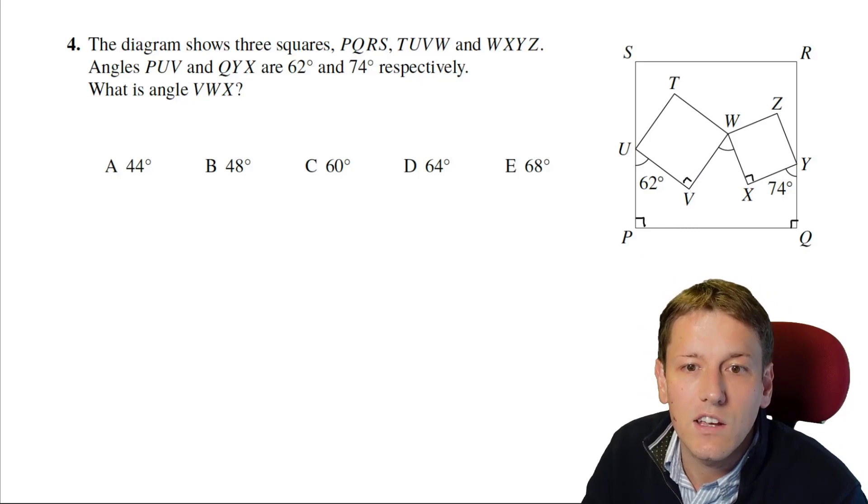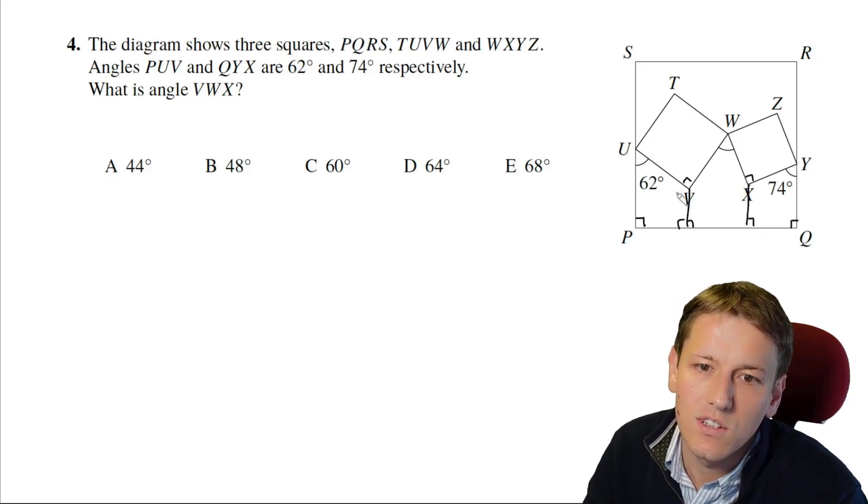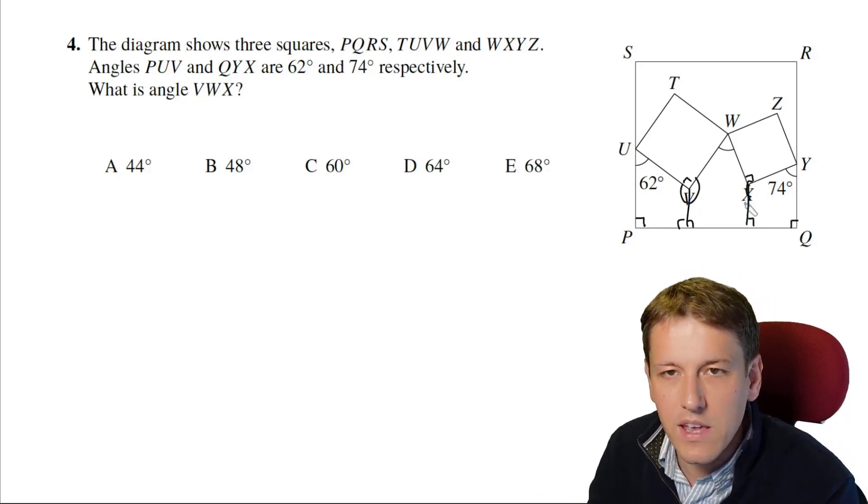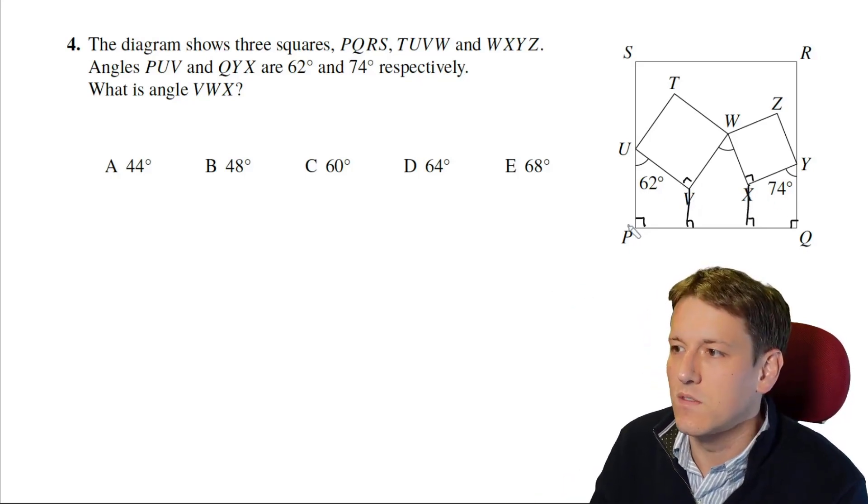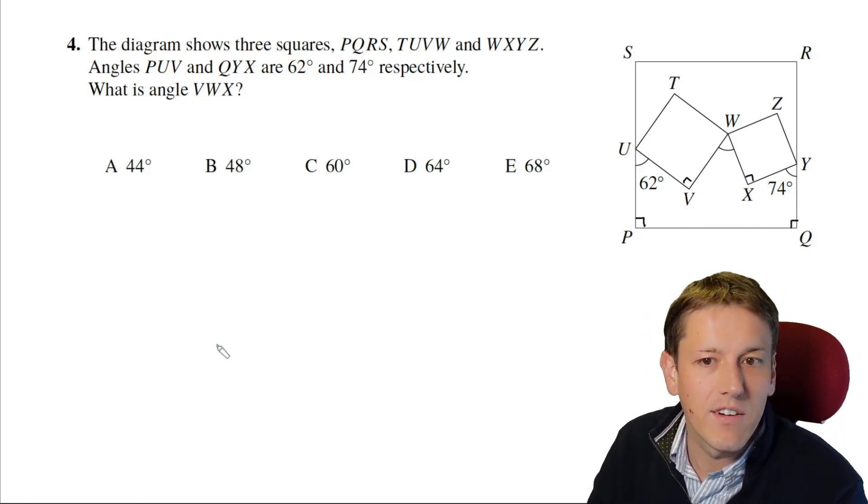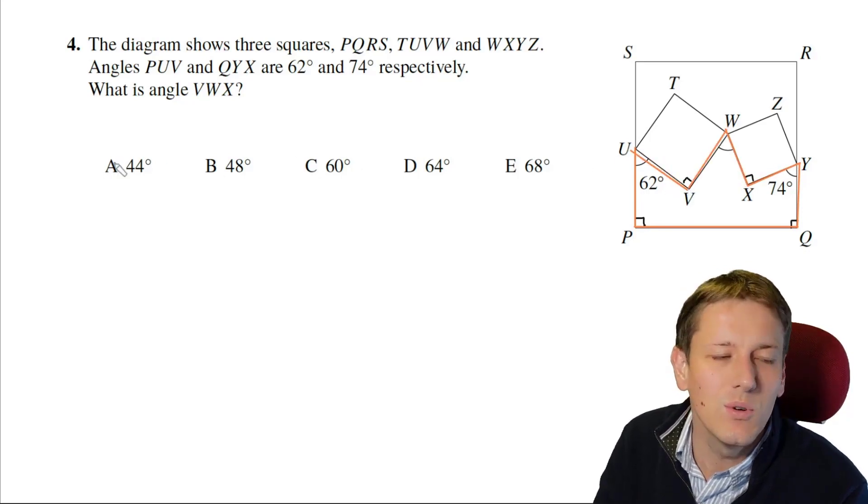You could add extra lines in here, and make right angles here and here, and then you could use a quadrilateral to work out this one, and then use the circle to work out this one, and do the same on this side as well, and you could chase the angles around that way. I'm going to do it in perhaps an even more efficient way than that, which is actually to spot a very helpful polygon here, which is this one, UPQYXWVU.